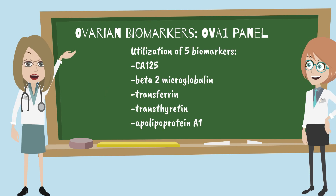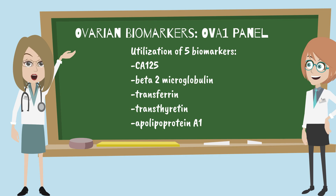OVA1, or a multivariate index assay, includes five biomarkers and was approved by the FDA in 2009. The markers include CA-125, beta-2-microglobulin, transferrin, transthyretin, and apolipoprotein A1. Scores are combined to give a risk index score. Similar to ROMA, menopausal status is used to create high and low probability of disease categories.